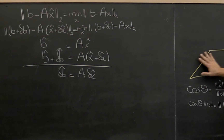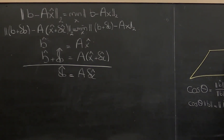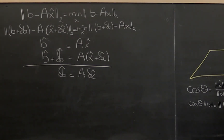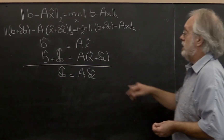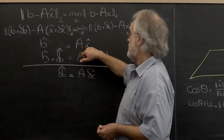Let's say that this yellow here represents the column space of A. We have our vector b, which typically will not be in the column space of A. To solve it, we looked at the projection of b onto the column space of A, and then we found the x that takes the correct linear combinations of the matrix A to give us b̂. So b̂ is equal to A times x̂.